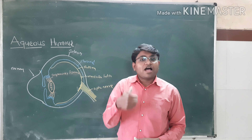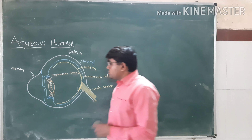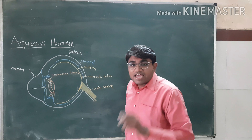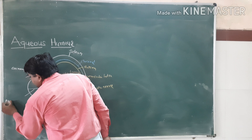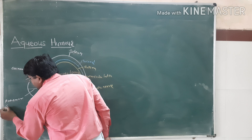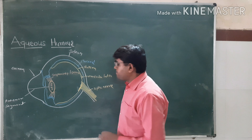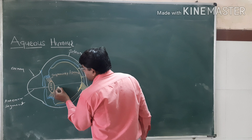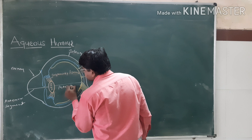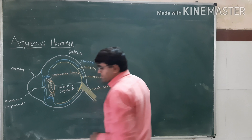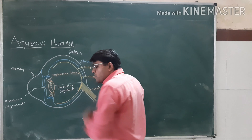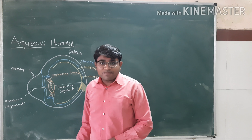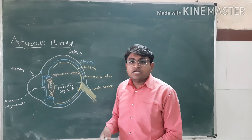The anterior segment is the part anterior to the lens — this whole cavity is known as the anterior segment. The part posterior to the lens — this whole cavity is known as the posterior segment. In this posterior segment, the vitreous body is present. The aqueous humor is a clear fluid located in the anterior segment.